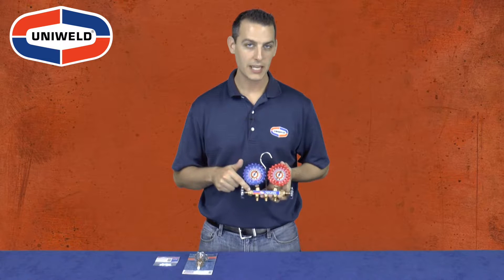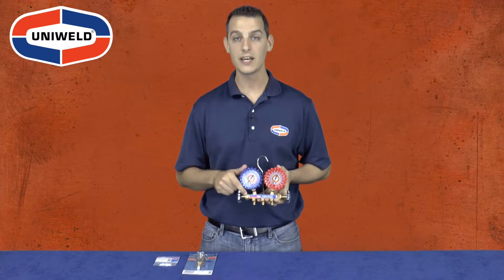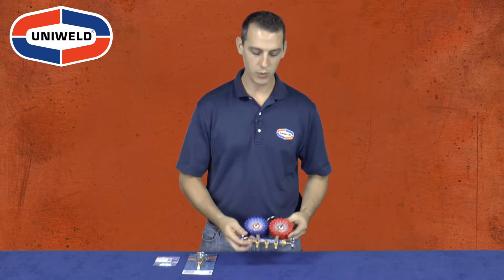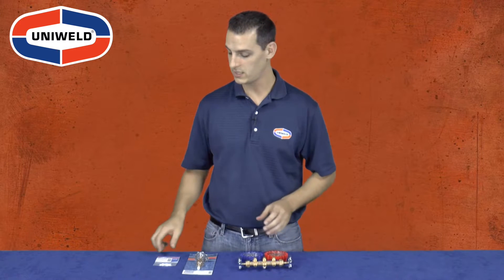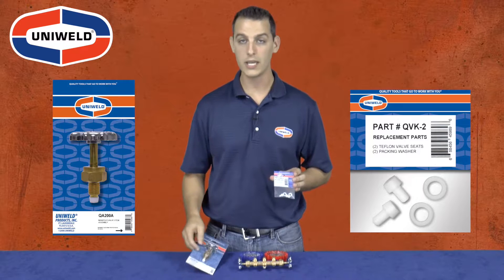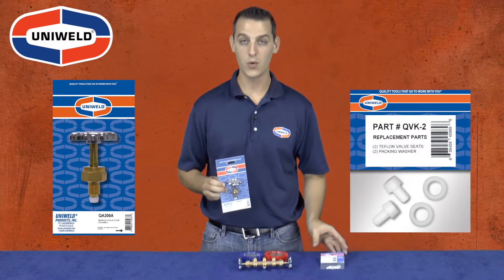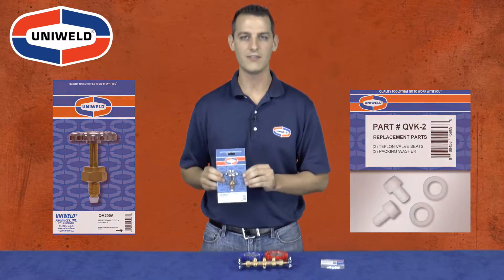After re-tightening the brass packing washer on the manifold body, if the valve continues to leak, then the Teflon seat and packing washer will need to be replaced. This is also a simple repair that can be done two different ways: Uniweld's QVK2 manifold valve repair kit or Uniweld's QA200A full valve assembly. The simplest and most straightforward option is to replace the full valve assembly.